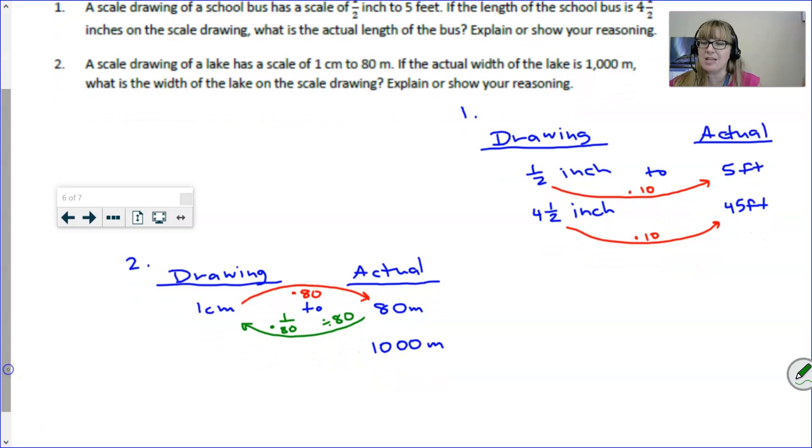Either way, no matter how you decide to look at it, if I know the actual length is 1000 meters, then I can take that, divide it by 80, and that will give me the drawing amount. How long or how wide is that length going to be in the drawing?